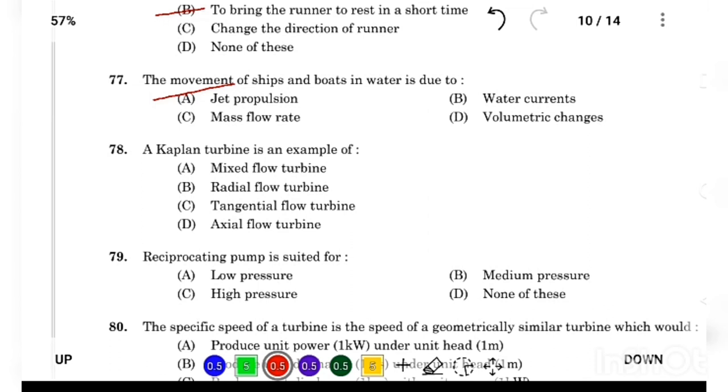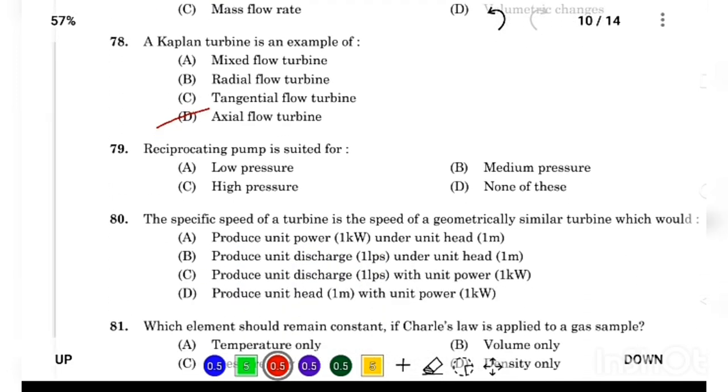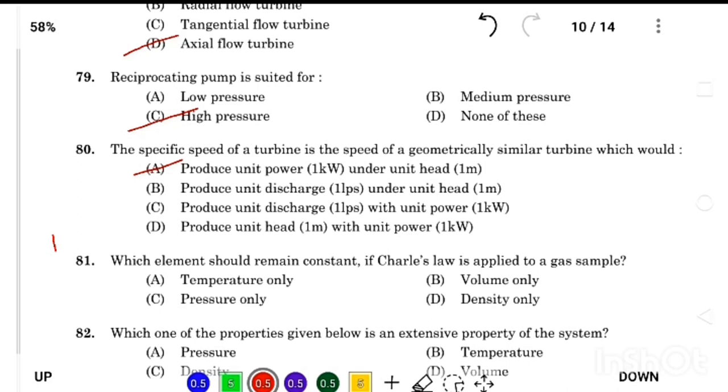A Kaplan turbine is an example of Answer Option D, axial flow turbine. Reciprocating pump is suited for Answer Option C, high pressure. The specific speed of a turbine is the speed of geometrically similar turbine which would Answer Option A, produce unit power under unit head.